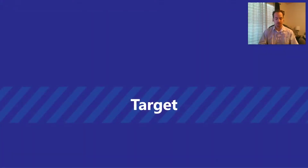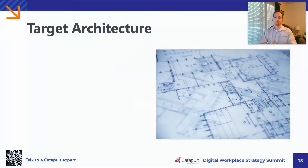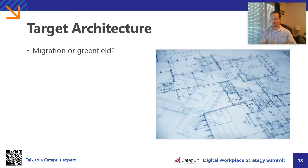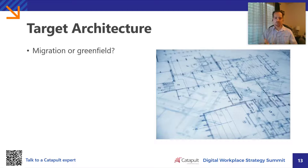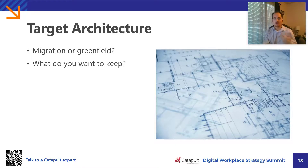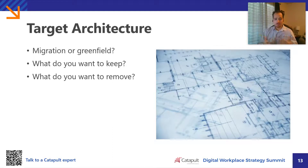Once all of this is complete, the next natural step is to begin designing your target system. Now with any target architecture, one of the first questions to ask is whether it's a migration or a greenfield deployment. Most of our engagements are somewhere in between — they're a hybrid style. But in either case, it's really important to understand what do you want to keep and what do you want to remove. Keeping aspects of an existing architecture that are working well is perfectly fine, but simply understanding what you want to keep is a really good place to start.